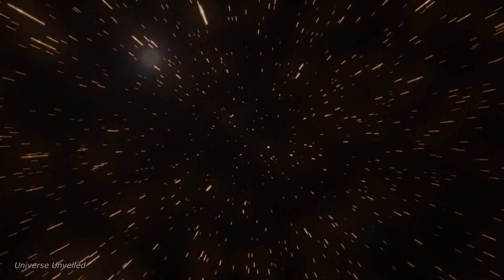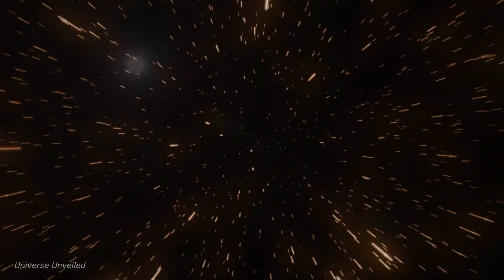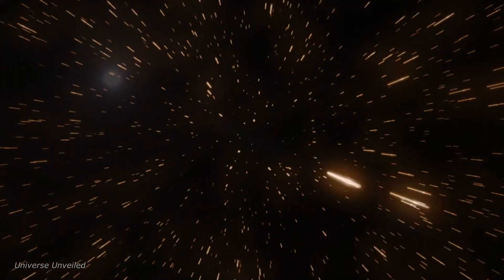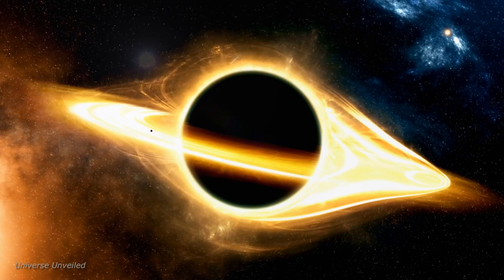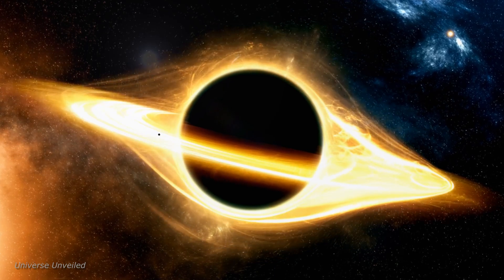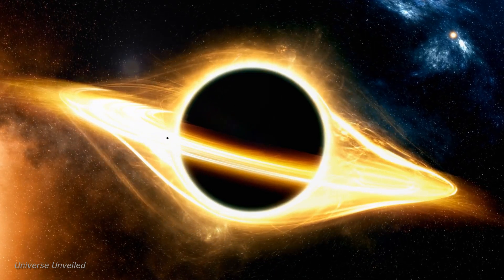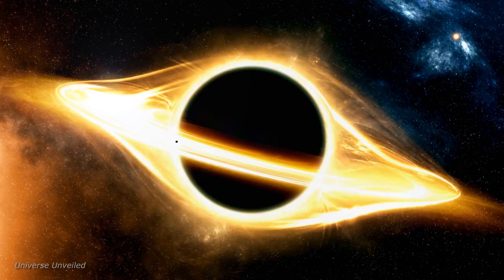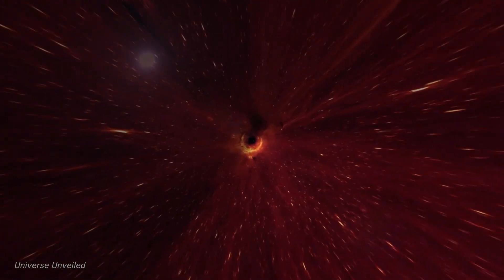As gas and dust fall towards the black hole, they form an accretion disk, a swirling vortex of superheated matter that emits intense radiation across the electromagnetic spectrum. This radiation provides astronomers with a glimpse into the extreme environment surrounding a supermassive black hole.